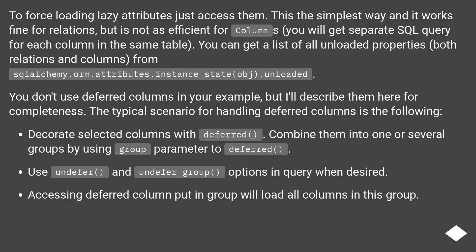To force loading lazy attributes, just access them. This is the simplest way and works fine for relations, but is not as efficient for columns — you will get a separate SQL query for each column in the same table. You can get a list of all unloaded properties, both relations and columns, from sqlalchemy.orm.attributes.instance_state.unloaded. You don't use deferred columns in your example, but I'll describe them here for completeness. The typical scenario for handling deferred columns is: decorate selected columns with deferred, combine them into groups using the group parameter, and use undefer and undefer_group options in queries when desired.